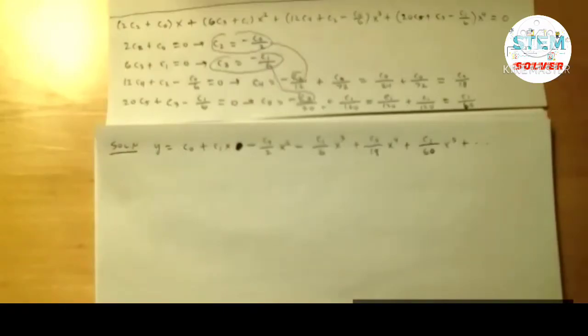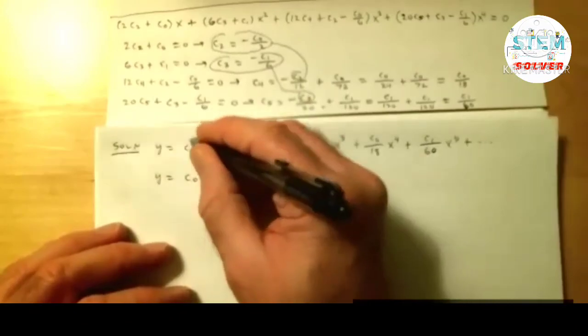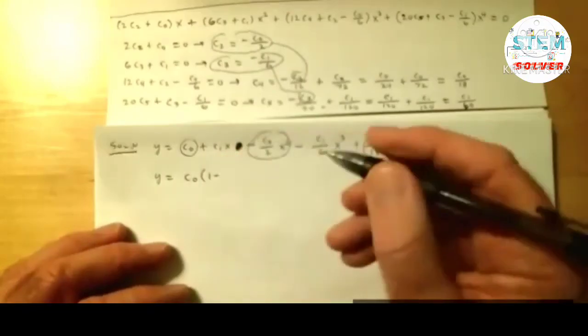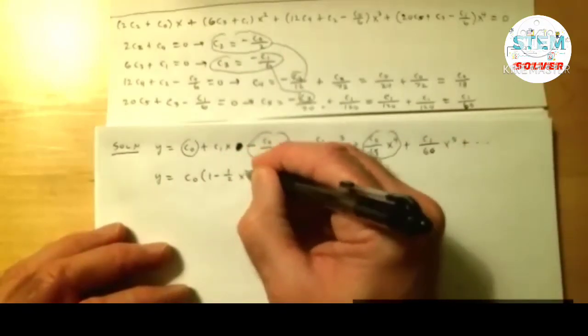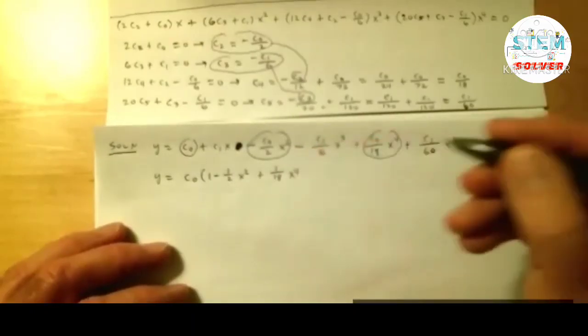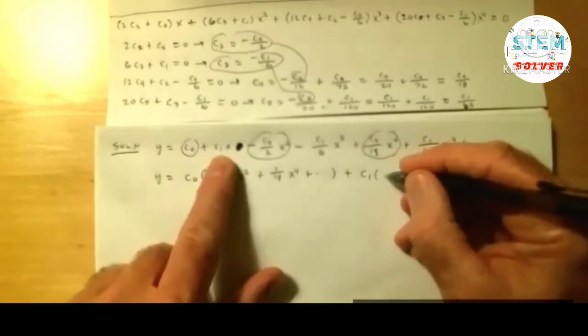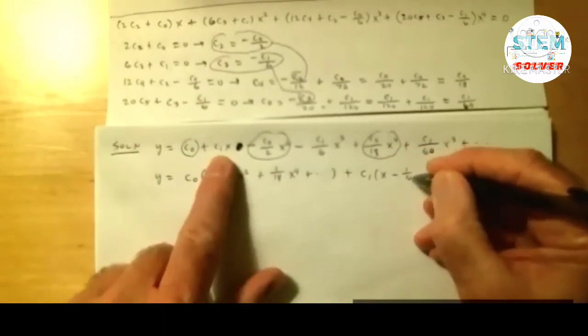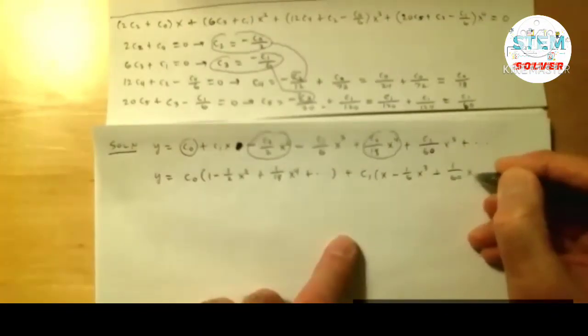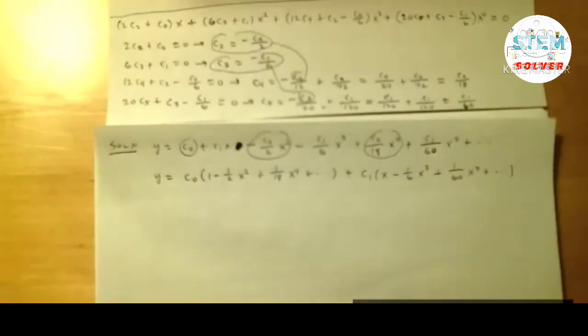We're going to take c0. It's the same thing. Look for your c0s. Factor out the c0, and you'll get 1 minus 1 half x squared, plus 1 eighteenth x to the 4th, dot dot dot, plus, and then the others all have c1, so factor c1 out, and you have x, minus 1 sixth x cubed, plus 1 over 60x to the 5th, plus dot dot dot. And that should be your answer.